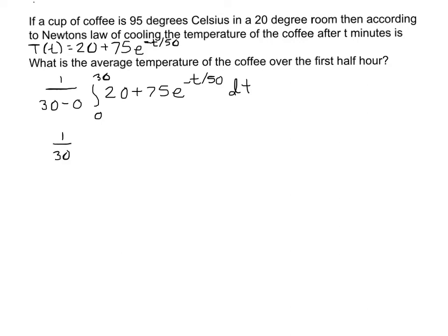So we have 1 over 30 out in front. We integrate 20 and get 20t. We integrate e to the negative t over 50 and get e to the negative t over 50, but because of that negative t over 50 we have to divide by negative 1 over 50, which is the same as multiplying by negative 50. We still have that 75 out in front, and we need to evaluate it from 0 to 30.